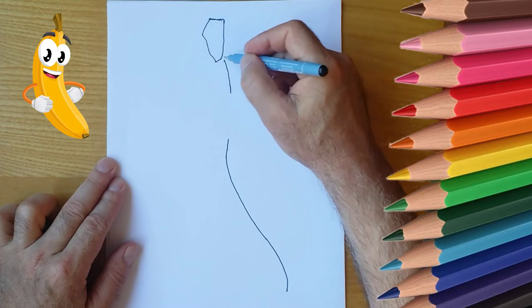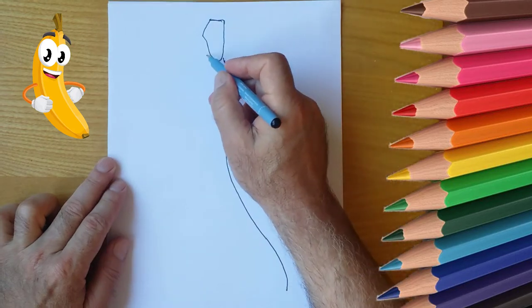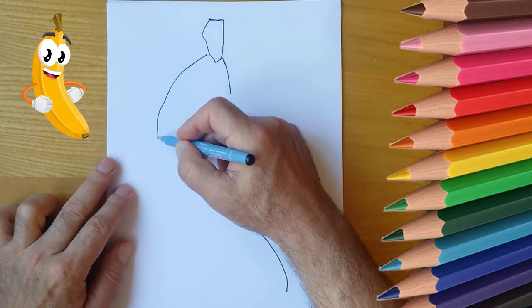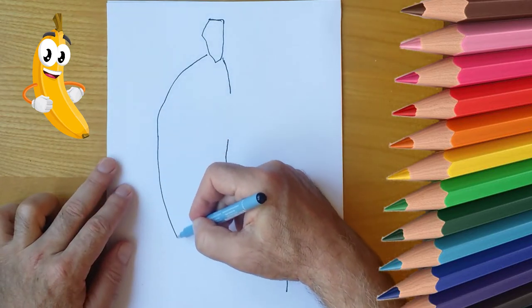He is cheerful and smiling. First, draw the contour of the banana.